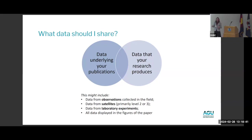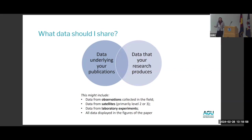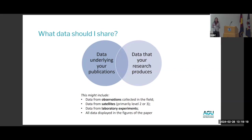Even if it's a data set from a field site where you haven't quite figured out the research question, you can put that data out there — it's a unique and highly important output of your work. For the earth and space sciences, your data might include observations from the field, data from satellites, or data from lab experiments. If you're worried and don't know what to share, you can always default to sharing the data that's in the figures in your paper — share that alongside your paper for maximum flexibility and transparency.